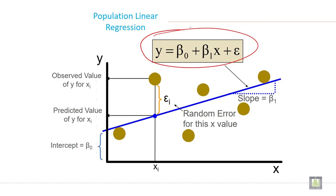y equals b0 plus b1x plus e, where y is the dependent variable, b0 is the constant or intercept, and b1 is the slope or coefficient of the independent variable. x is the independent variable and e is the error term.